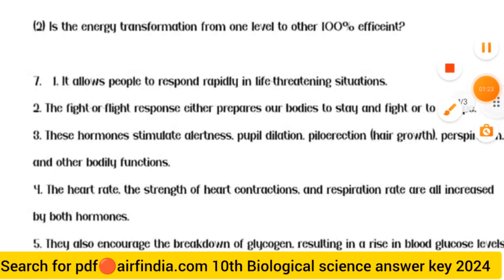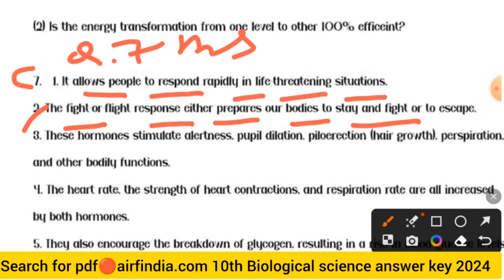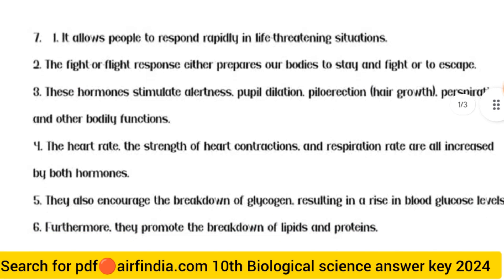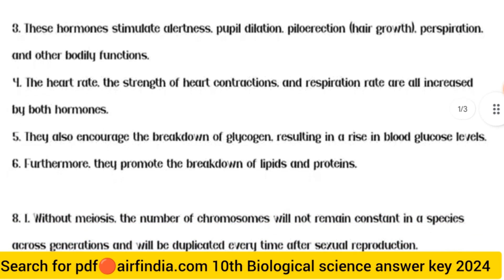The answer to question seven — the fight or flight hormone: Point one, it allows people to respond rapidly in life-threatening situations. Point two, the fight or flight response prepares our bodies either to stay and fight or to escape. Points four and five — heart rate, strength of heart contractions, and respiration rate are all increased by both hormones. They also encourage the breakdown of glycogen, resulting in a rise in blood glucose levels, and promote the breakdown of lipids and proteins.